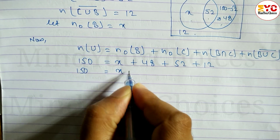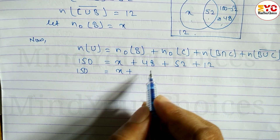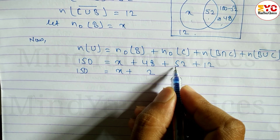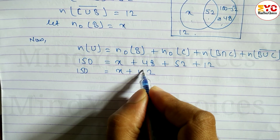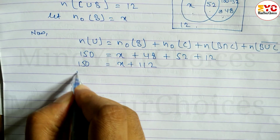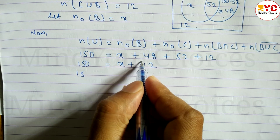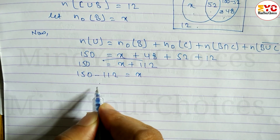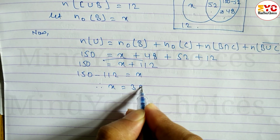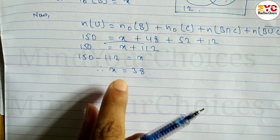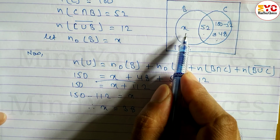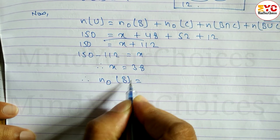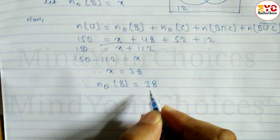So, 150 = X + 112. Taking 112 to the left side: X = 150 − 112 = 38. Therefore, N(only-B) = 38. Now, N(B) = N(only-B) + N(B ∩ C) = 38 + 52 = 90.